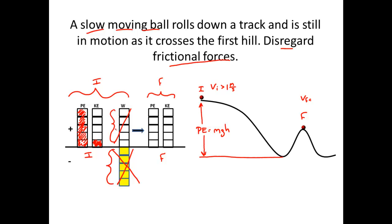The ball simply rolls down the hill and back up the other side, and we disregard friction, so we're not seeing any positive work done on the ball. The question is: what does the bar graph on the other side look like? The ball does have some PE because it has a little height. Initially, I started out with five bars of potential energy and one bar of kinetic energy — six total. The energy is not lost because there's no friction, so on the final side I should also see six bars.